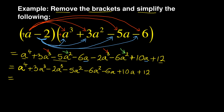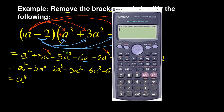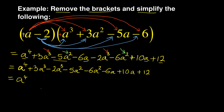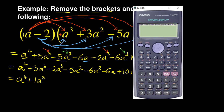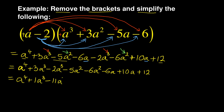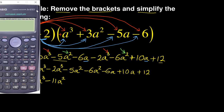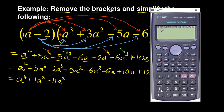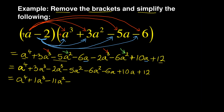Now I have to add what needs to be added. A to the power of 4 is alone. For the A cubed group, you focus on the numbers: 3 minus 2 is 1, so it's positive 1A cubed. You move on to A squared: minus 5 and then minus 6 — so minus 5 minus 6 is minus 11. Retain your A squared. Then the A part: minus 6 plus 10 is a positive 4, so it is plus 4A. Don't forget you are dealing with the variable A.